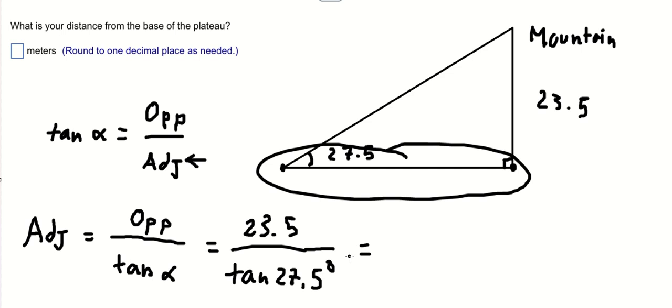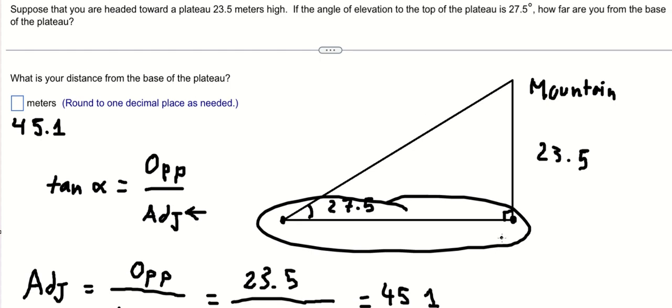So we have the final answer. Adjacent equals opposite over tan α, which is 23.5 divided by tan 27.5°, equals 45.1 meters. Thank you for watching.